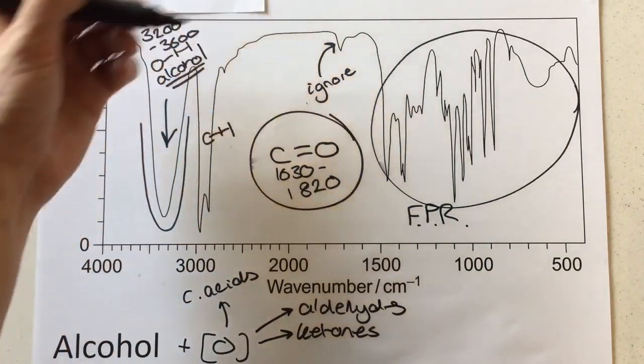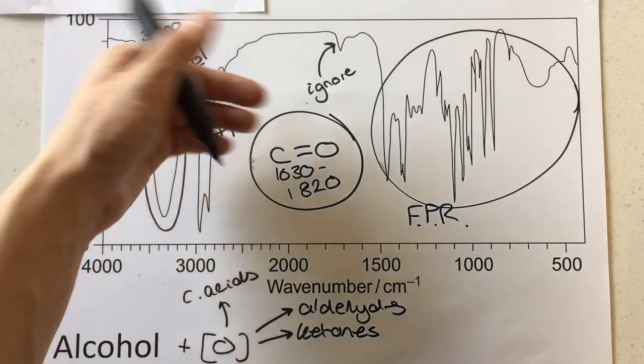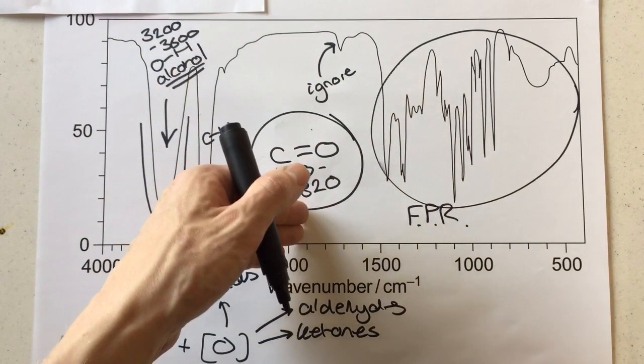If we were making an aldehyde or a ketone, this OH peak would diminish and disappear, whereas that would appear. That would tell us that the reaction had been completed based on that sample from the mixture.